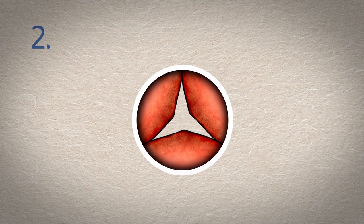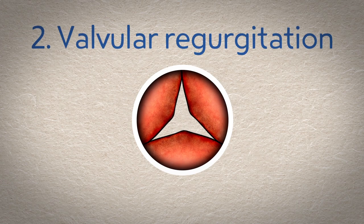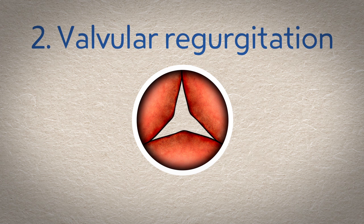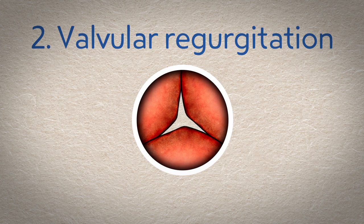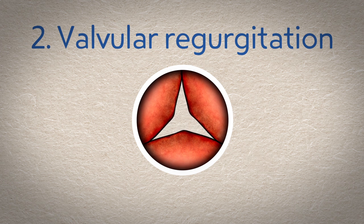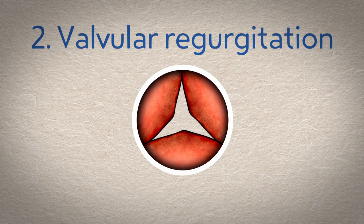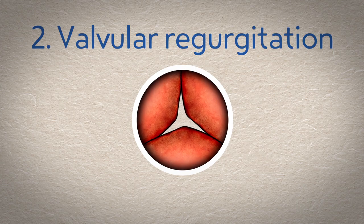Valvular regurgitation is also known as a leaky valve and is the result of a valve not closing tightly. Depending on which valve is affected, this is known as pulmonary regurgitation, mitral regurgitation, or aortic regurgitation.